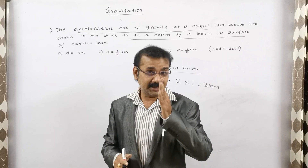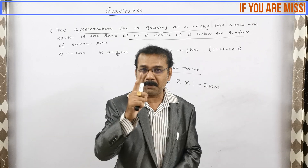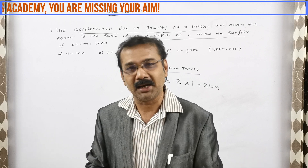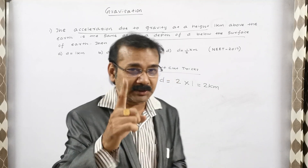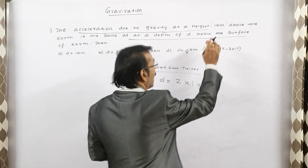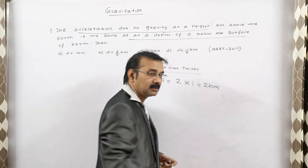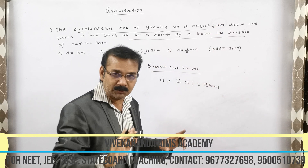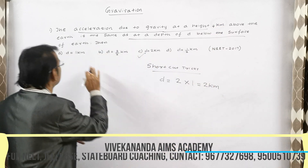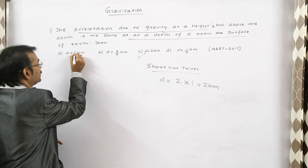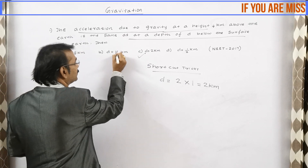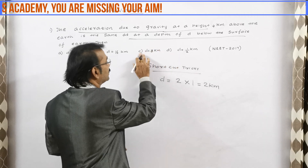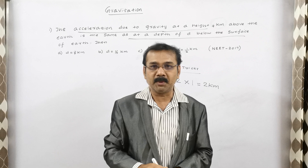Now I am going to give one more sum for your practice — please give your answer in the comment area. Using the same model: instead of one kilometer, I am keeping it as four kilometers. The options are: eight kilometers, sixteen kilometers, three kilometers, and d equal to one by two kilometer. Please give your answer in my comment area.